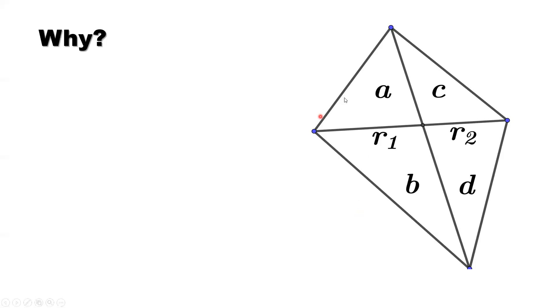Why? Now look at the top two triangles with area a and c. What is the formula for the area of a triangle? It's base times height. So here, for the two top triangles, the first base we use notation r1.